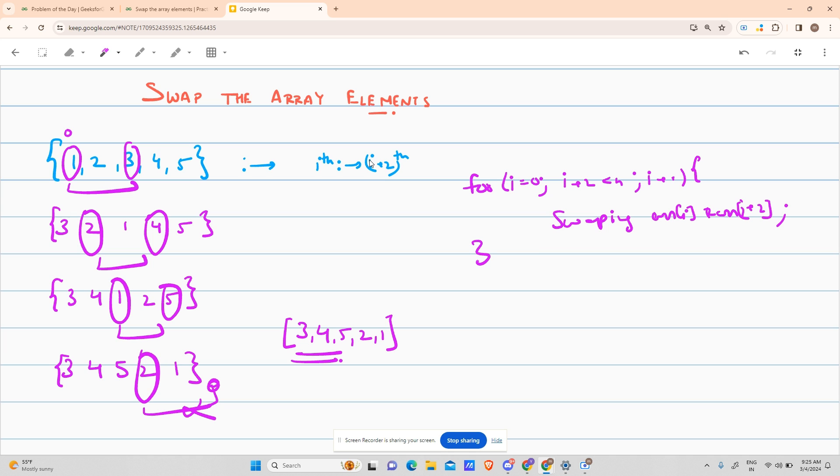This is our only operation. And for swapping, we have three options. First option is to use the standard way. What is the standard way? The standard way is we create a temporary variable: temp equals to arr[i], arr[i] equals to arr[i+2], and at last arr[i+2] equals to temp.